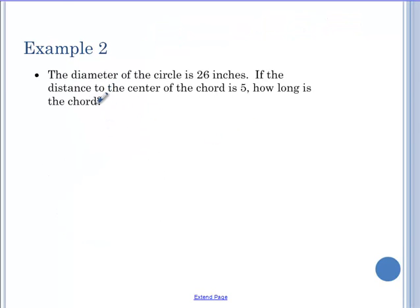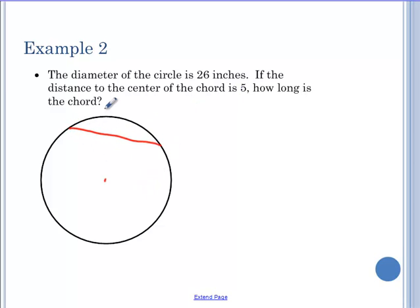Next one. Same idea. The diameter of the circle is 26. I want to find the length of a chord knowing that information. So here's my circle. I have the diameter being 26. Let's not draw it yet. Distance to the center with the chord is 5. How long is the chord? I'm going to start by drawing my chord. Now I'm going to connect my chord to the center. Now if the diameter is 26, that means R is 13. So I'm going to label that 13.